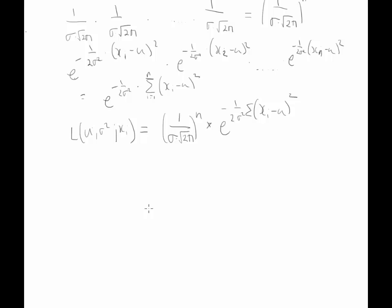Now what we do is take the log of this. So to take the log, we take the log of this, so this becomes n log of 1 over sigma square root 2 pi plus log of e to the minus 1 over 2 sigma squared times the sum of xi minus mu squared.